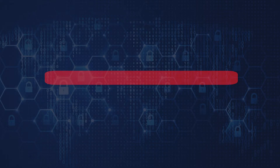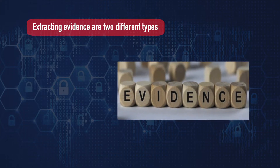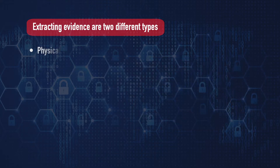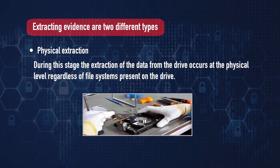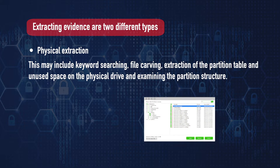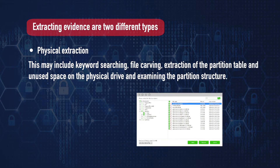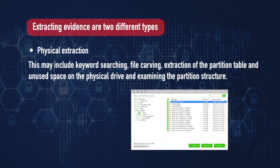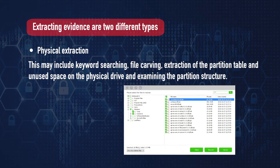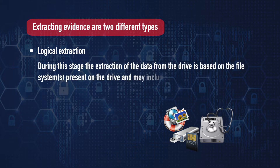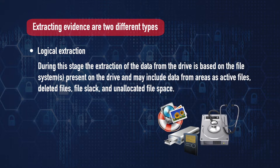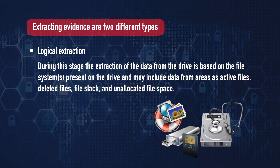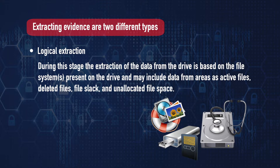Next is extracting evidence. There are two types: physical extraction and logical extraction. During physical extraction, data is extracted from the drive at the physical level regardless of the file system present, and may include keyword searching, file carving, extraction of the partition table, unused space on the physical drive, and examining the partition structure. Logical extraction is based on the file system present on the drive and may include data from active files, deleted files, file slack, and unallocated file space.